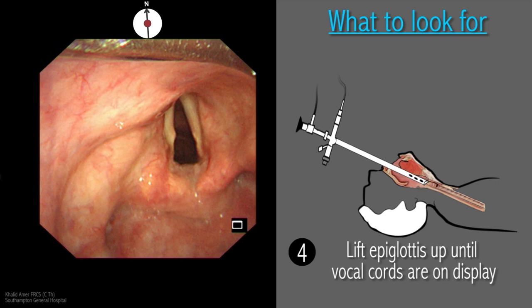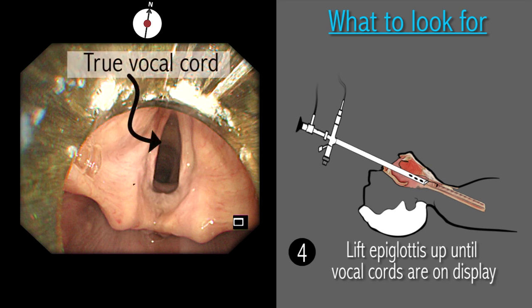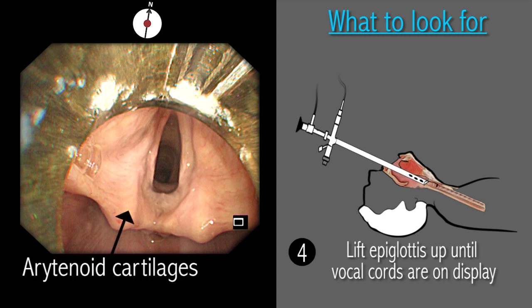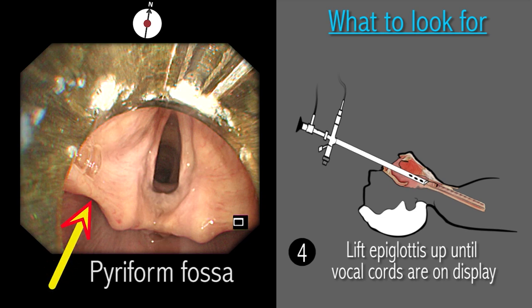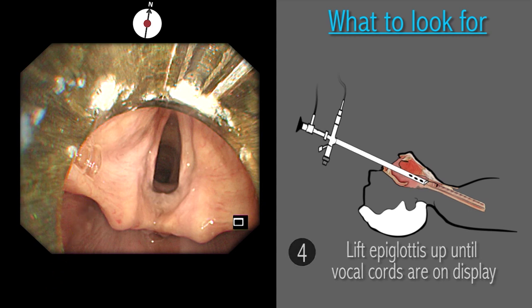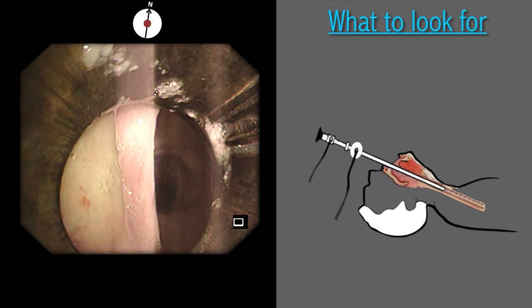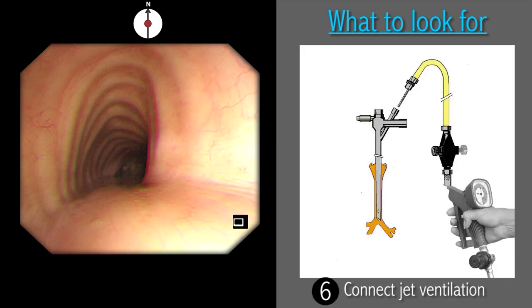Once the epiglottis is lifted and the scope is advanced a couple of millimetres, the vocal cords should come into view. The operator should note any abnormalities of the epiglottis, vocal cords, and larynx, and report these to ear, nose, and throat surgeons for advice or follow-up, preferably with a photograph. With good muscle relaxation, the cords are seen to be abducted away from the median line and stationary. The rigid scope is then turned 90 degrees to the right before introducing it via the cords, aligning the shortest diameter of the tip transversely to avoid damage to the cords.